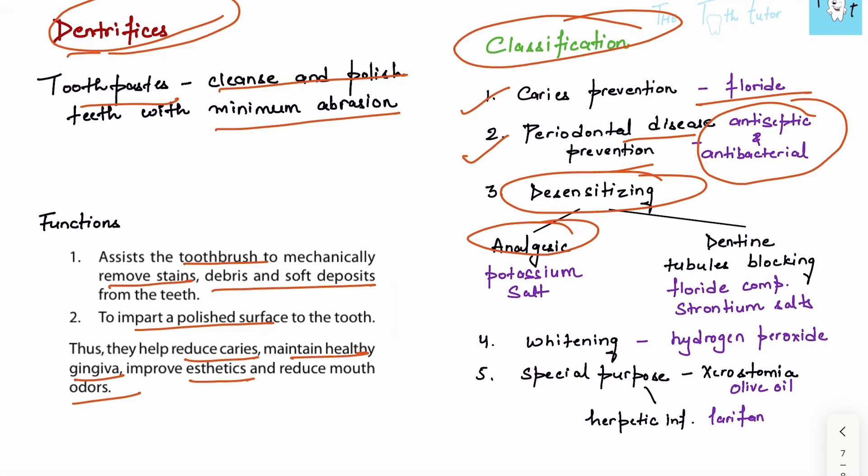Then we have desensitizing toothpaste, which desensitizes based on two principles. First is analgesics - what analgesics do is they have high potassium salt concentration, increasing the extraneural potassium and preventing any impulse from traveling. So it won't let any impulse go. Then we have dentin tubule blocking toothpaste, which contains fluoride and strontium salts. They block the dentin physically so the dentin wouldn't be able to detect any changes in the surrounding.